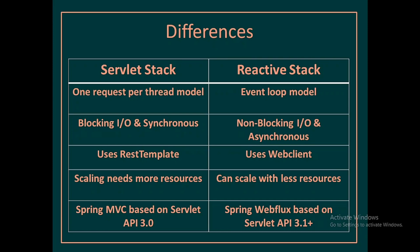In the case of the Reactive stack, we have an event loop model. Whenever a request comes in, the event loop delegates that request to a worker thread and remains available to serve more requests. Whenever the response is available, any worker thread can pick it up and send it back to the client.